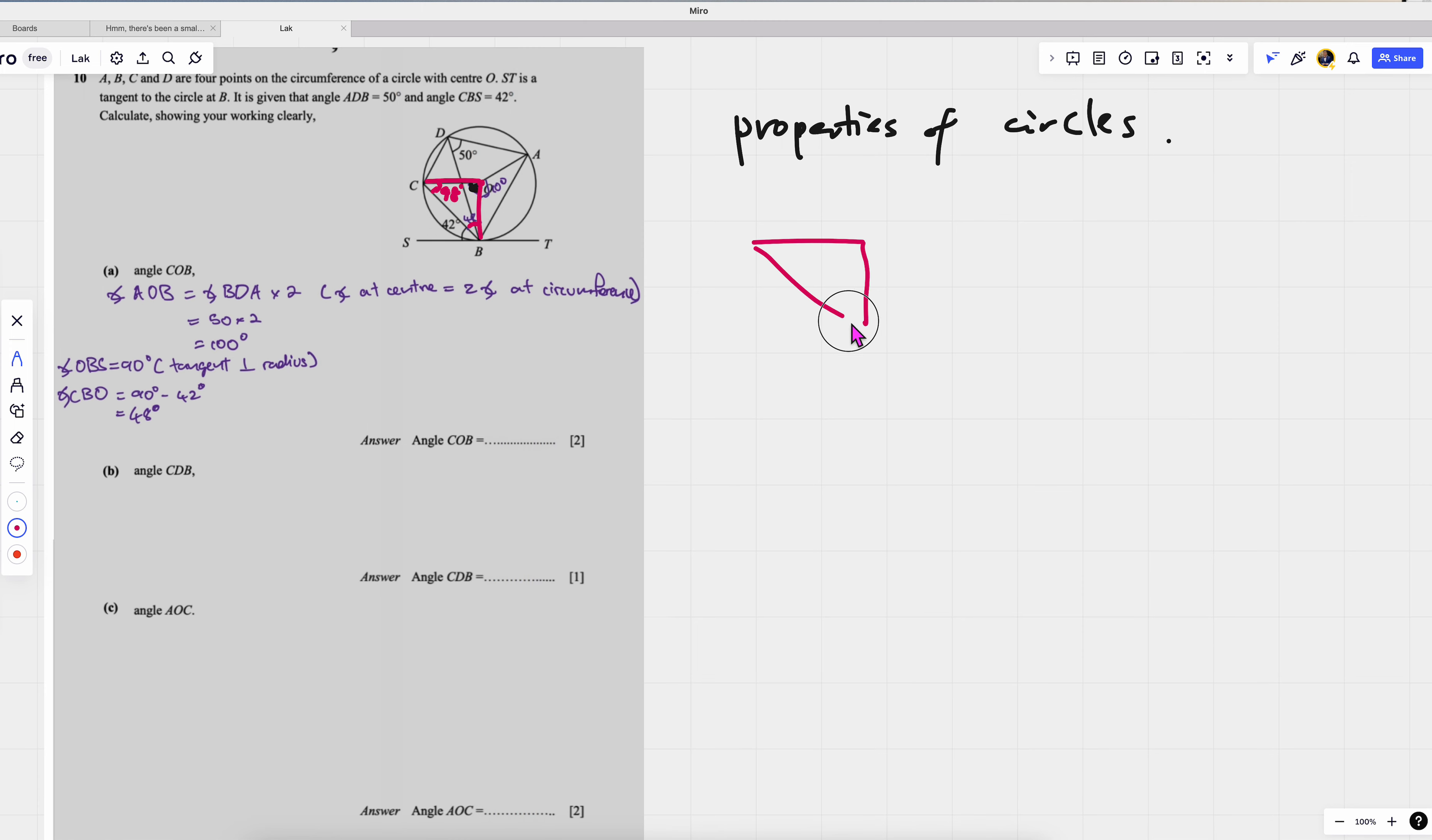Extract it out so that you can see it more clearly. So once you have 48, 48, then you can find this angle already.